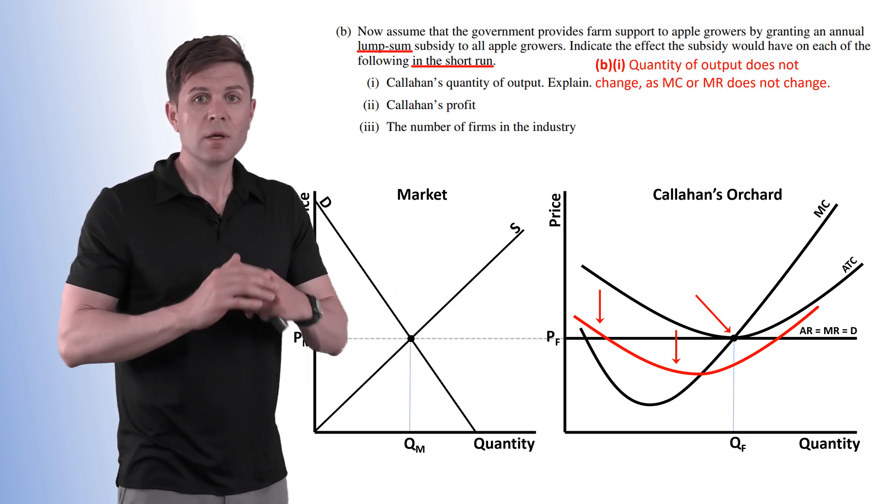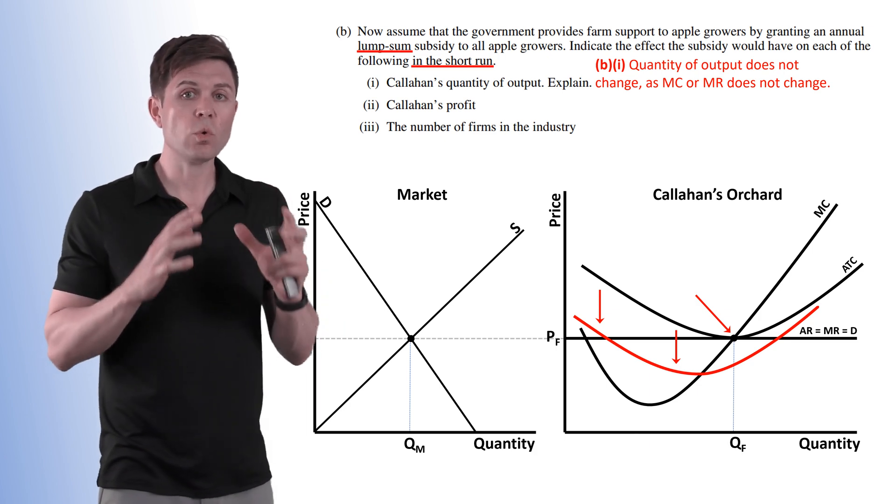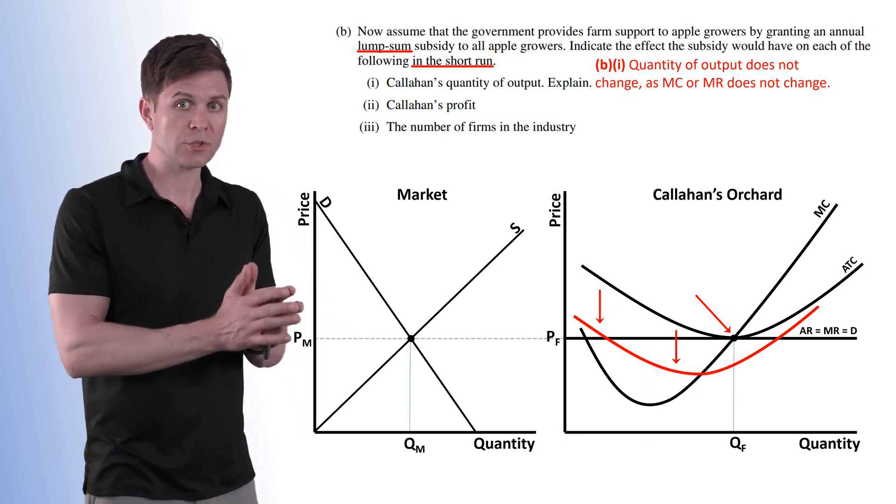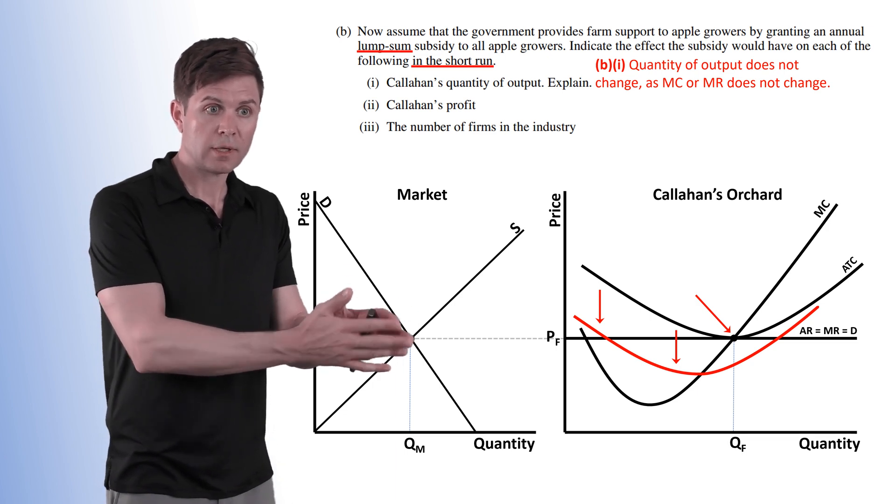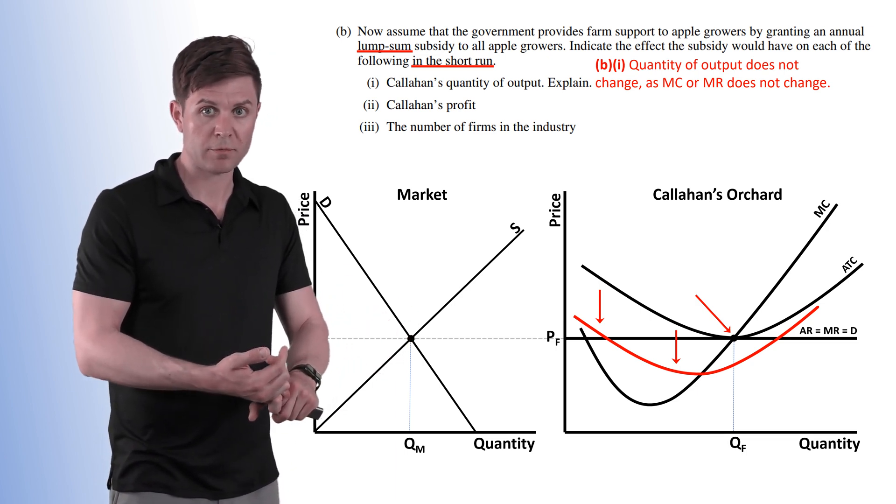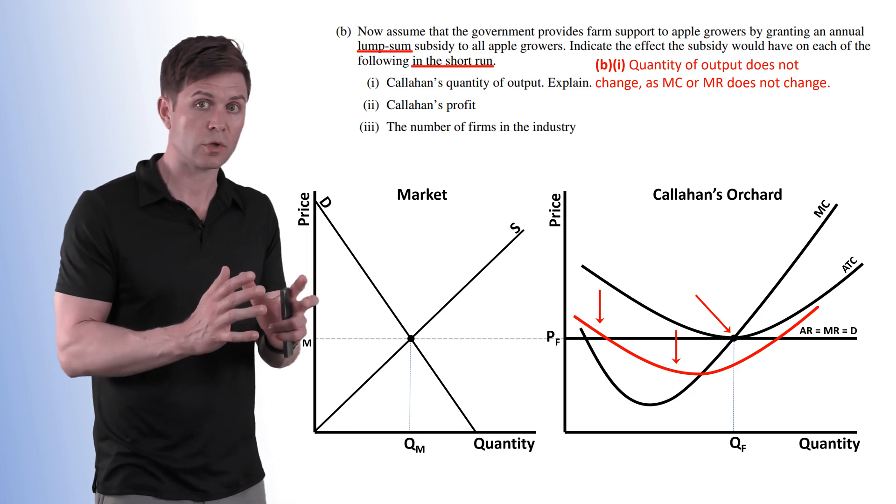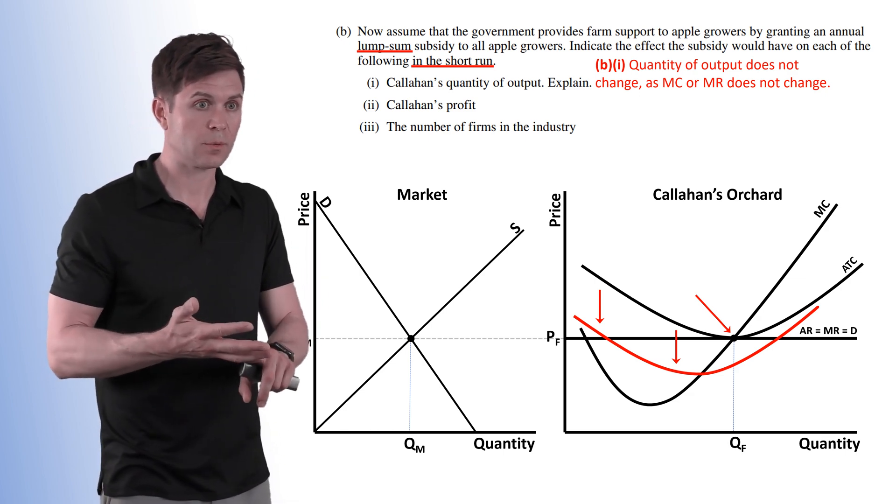Now so what is happening to our output because of that? Nothing. Quantity of output does not change. The only thing that's going to shift the production levels at the firm level is either if marginal cost shifts or marginal revenue shifts. Those are the two curves that determine where we produce MC equals MR.